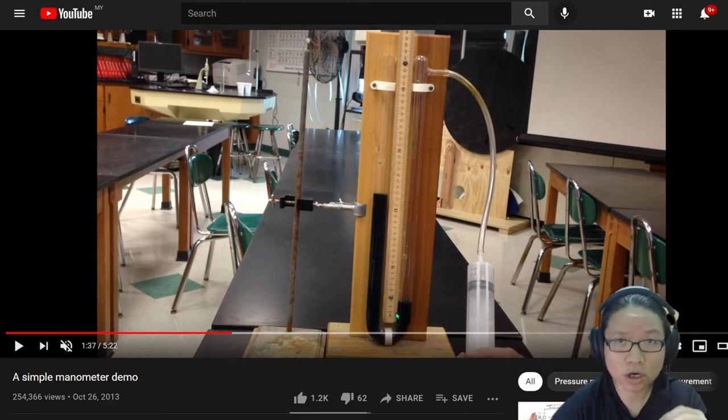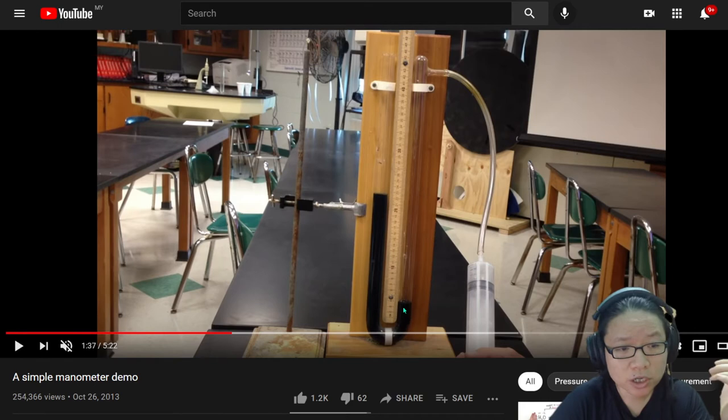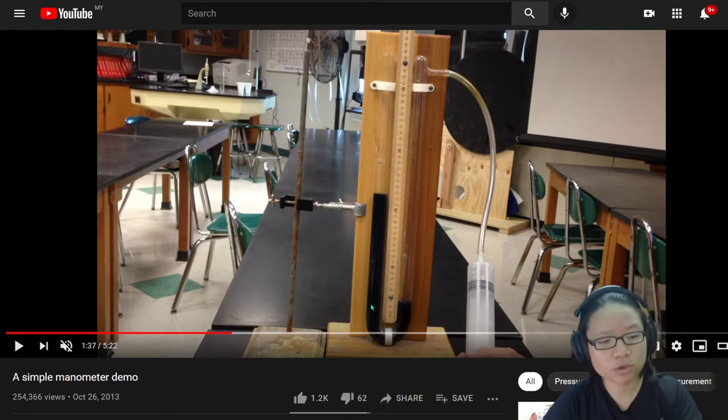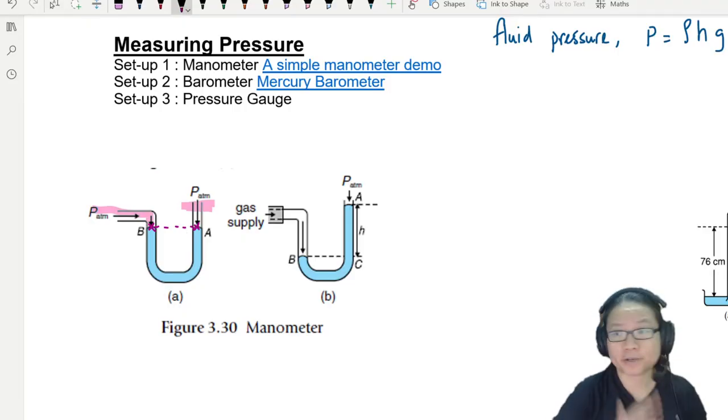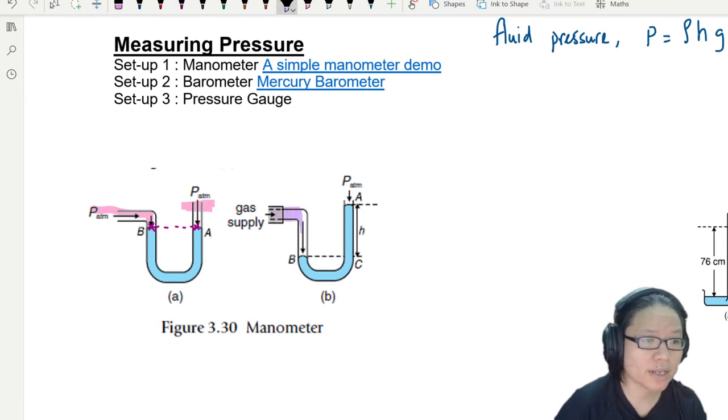A very important idea here is because of the way fluid pressure behaves at the same level, we will have the same pressure. So the level here is the same as the level here. Let's bring that to our OneNote. So if you look at the second diagram, this one is connected to the gas supply and we have the gas flowing in and exerting a pressure on the arm B. So if I'm going to write down here, let's say I mark out this pressure, the pressure of B, B is equal to the gas pressure.